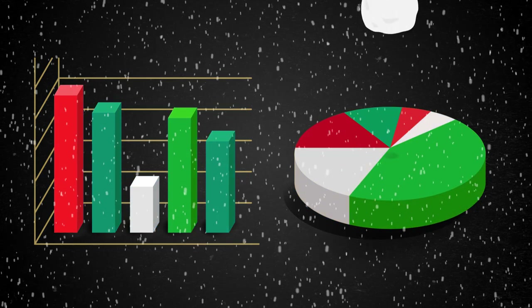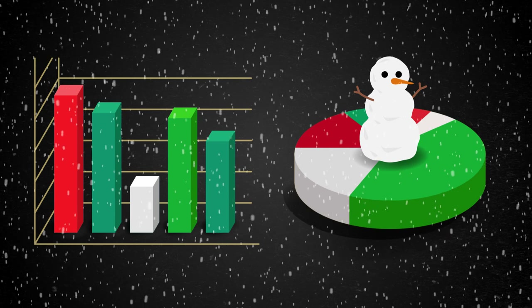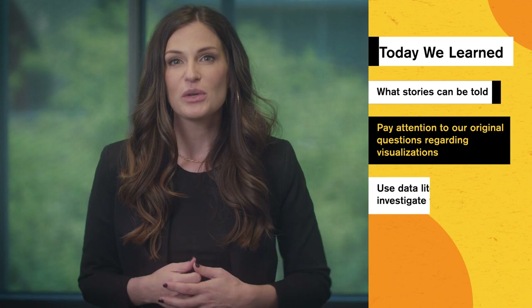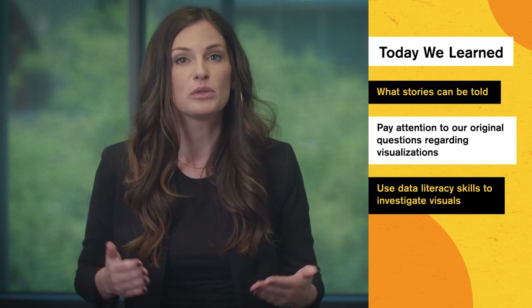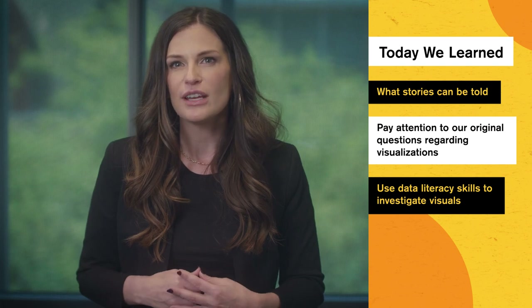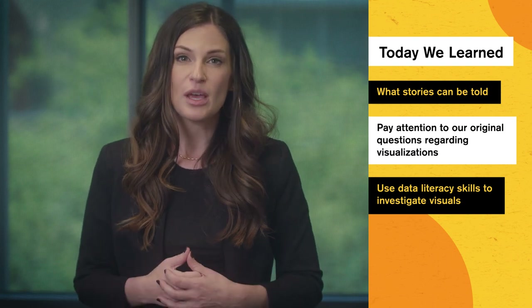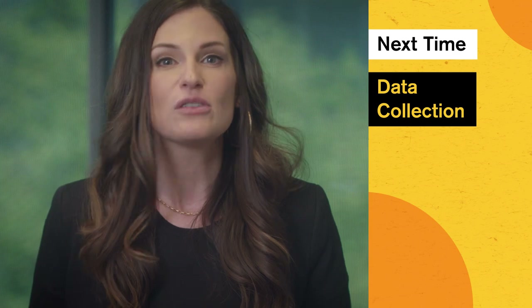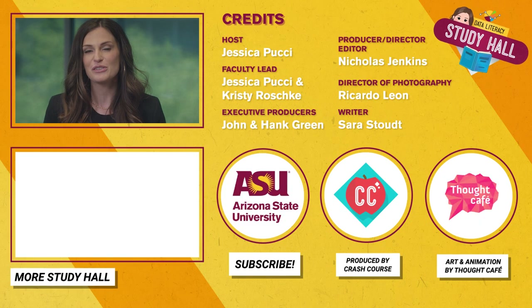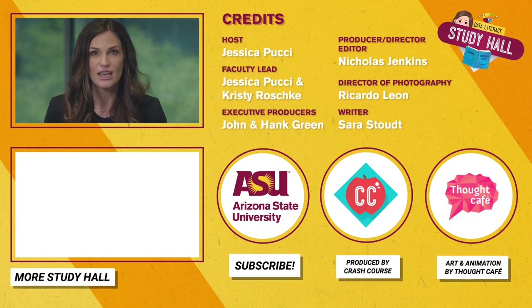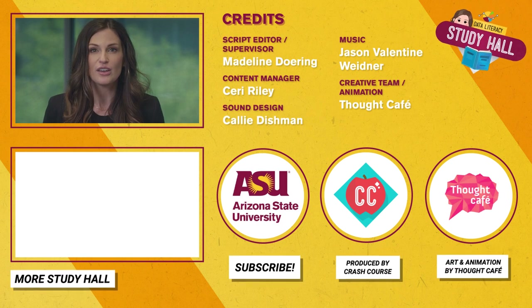Some color palettes can even hide the story altogether. A red and green palette might seem festive, but some colorblind viewers won't be able to see a difference. Seemingly simple choices like this are a major factor in determining how inclusive our data story is. No matter what story we're trying to tell, we can always try to be empathetic to our viewers. So a picture really is worth a thousand — or even a million — data points. Today we learned what stories can be told and to pay attention to our original questions when deciding what visualization to use, and we still need to use our data literacy skills to investigate visuals. Be sure to subscribe and see you next time.